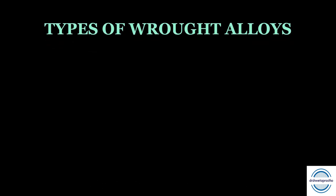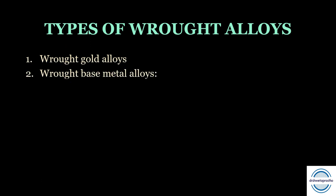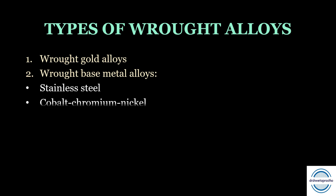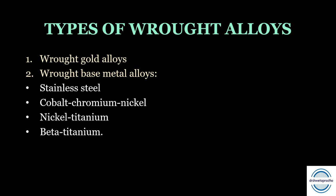Next we come to the classification of wrought alloys. Wrought alloys can be of mainly two types: wrought gold alloys and wrought base metal alloys. In the wrought base metal alloys, there are four further alloys: first is stainless steel, second is cobalt-chromium-nickel, third is nickel-titanium, and fourth is beta titanium. Let us discuss them one by one.